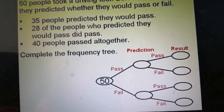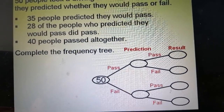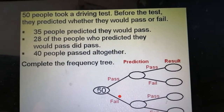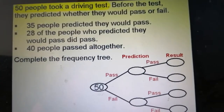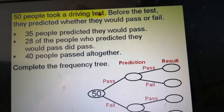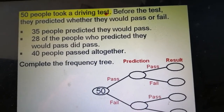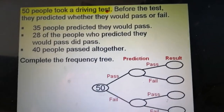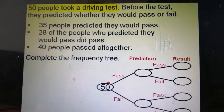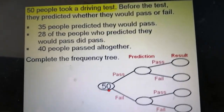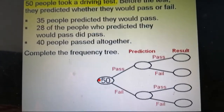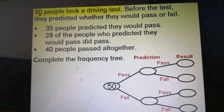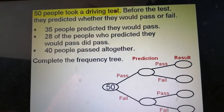I'm going to use a line by line approach to fill in the missing numbers in the frequency tree. The first line tells me that 50 people took a driving test, and you can see that there's a 50 here already, so that must be that line.